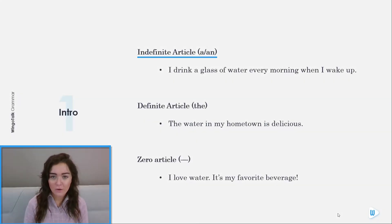Indefinite article: an or a. I drink a glass of water every morning when I wake up. Definite article: the. The water in my hometown is delicious. Zero article: I love water. It's my favorite beverage.